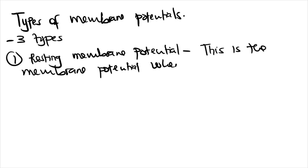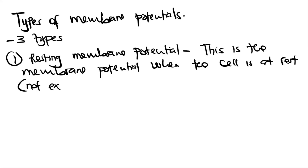When we say the cell is at rest, we mean the cell is not excited — there is no stimulus, no hormone, no neurotransmitter acting on the receptors of the cell. This is the resting membrane potential. Different cells have different membrane potentials.